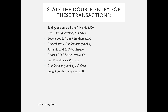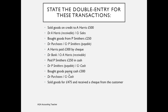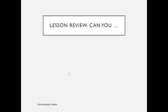If we buy goods paying in cash: debit purchases, credit cash. If we sold goods for £475 and received a cheque from the customer — we pay that cheque into the bank, so debit bank, credit sales with that amount.